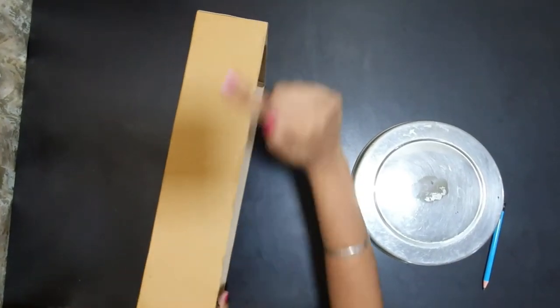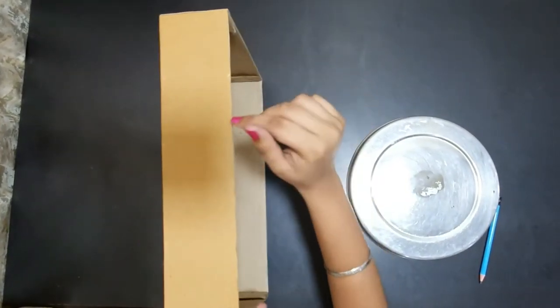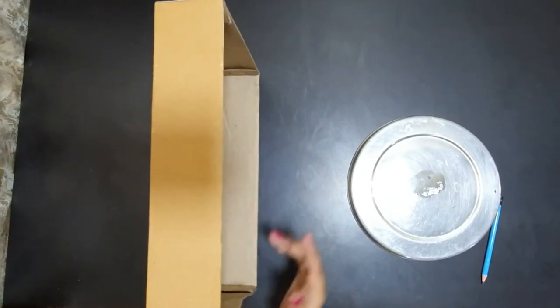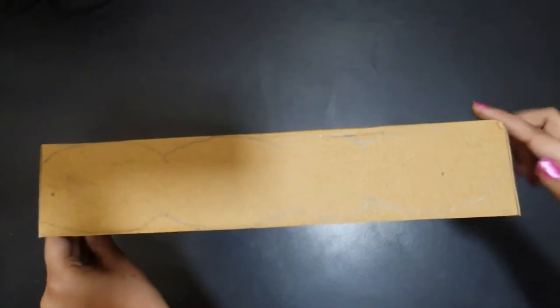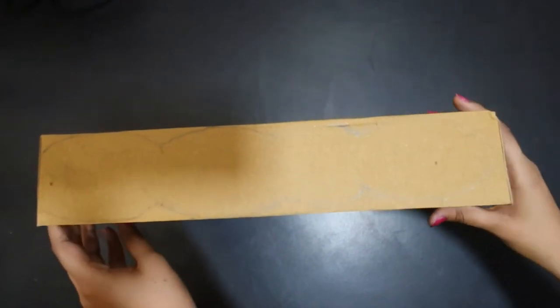And then, we will draw the side edges for the girl's hair. I have drawn a small piece. Now, with an adult's help, we will cut all these parts.